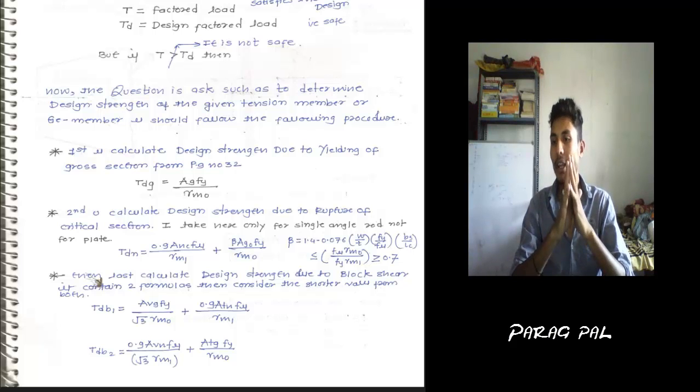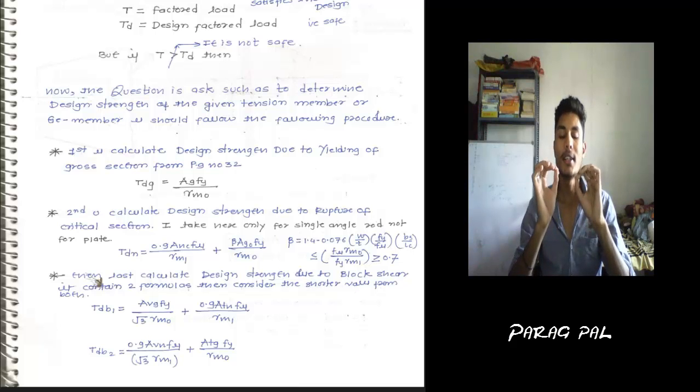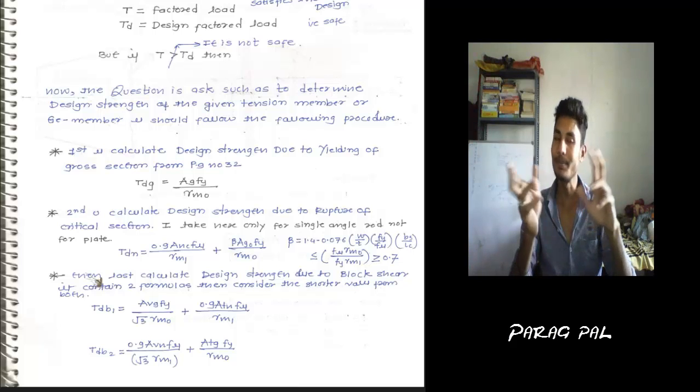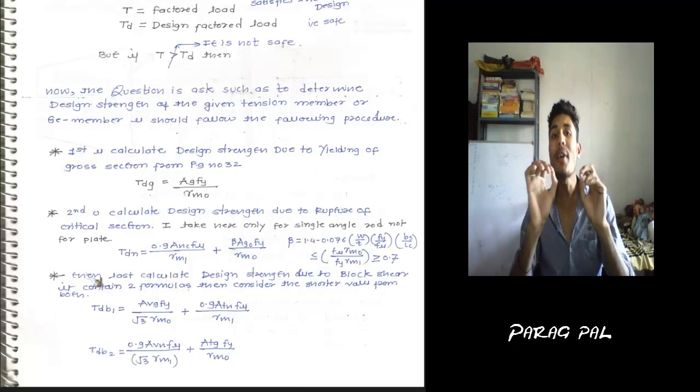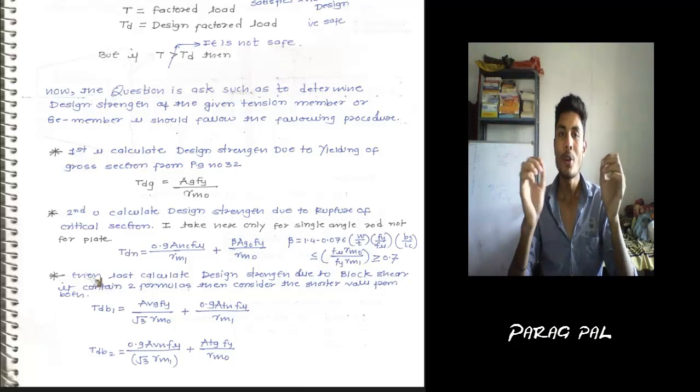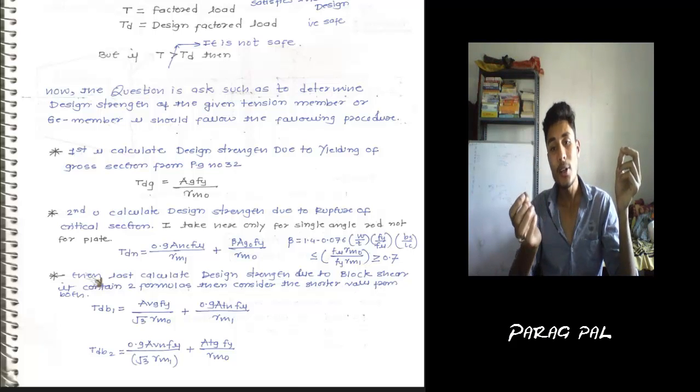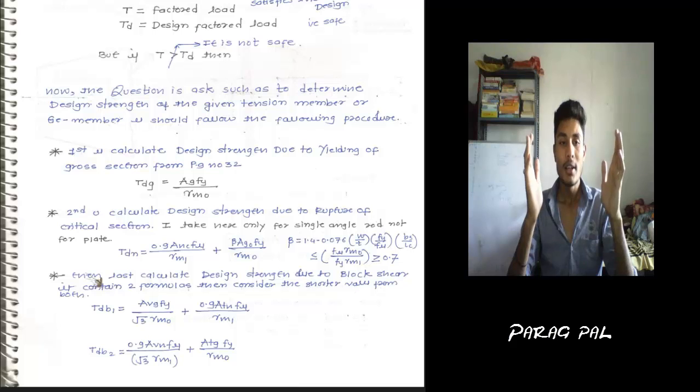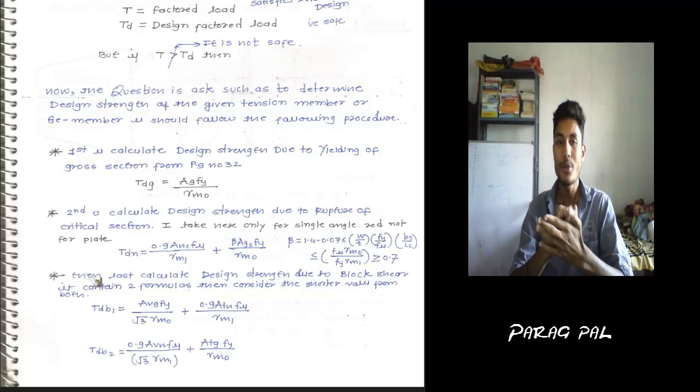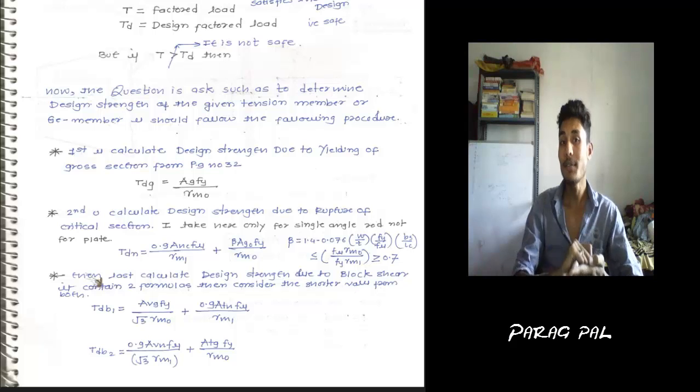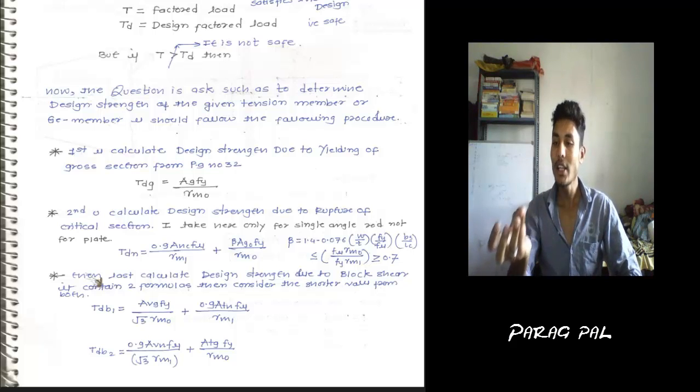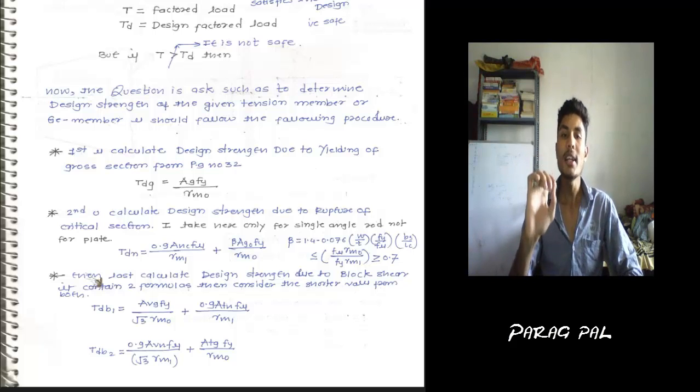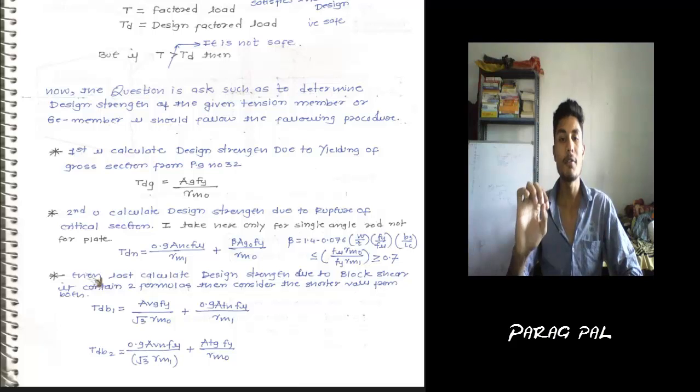T is a factored load. In every numerical, the numerical is provided with the factored load during the analysis and during the design. TD is a design factored load. You know about working load and safe load. If the working load is given, then for the factored load we multiply by 1.5. This is very important - it is the very starting procedure. We have to go around with the working load, safe load, and service load.